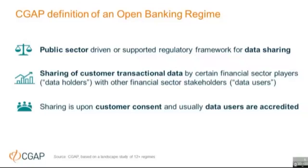This definition means certain initiatives called open banking don't fall under our scope. For example, purely private sector initiatives — such as one currently in Nigeria — fall outside the definition because they're not public sector driven. Also, open APIs is more of a technology: it's proprietary APIs that a financial sector provider makes available to other companies, allowing them to plug into its system. That is a unilateral action and is not the same as open banking. For open banking to be a regime, several firms must agree to data sharing based on certain guidelines, which may or may not include API standards.